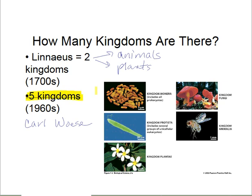Those five kingdoms are: kingdom Animalia for all animals including us; kingdom Fungi, which includes all mushrooms and yeasts; kingdom Plantae, which is all the different plants and trees; kingdom Protista, which is basically all single-celled organisms that do not make their own food; and kingdom Monera, which is the kingdom into which he put bacteria.